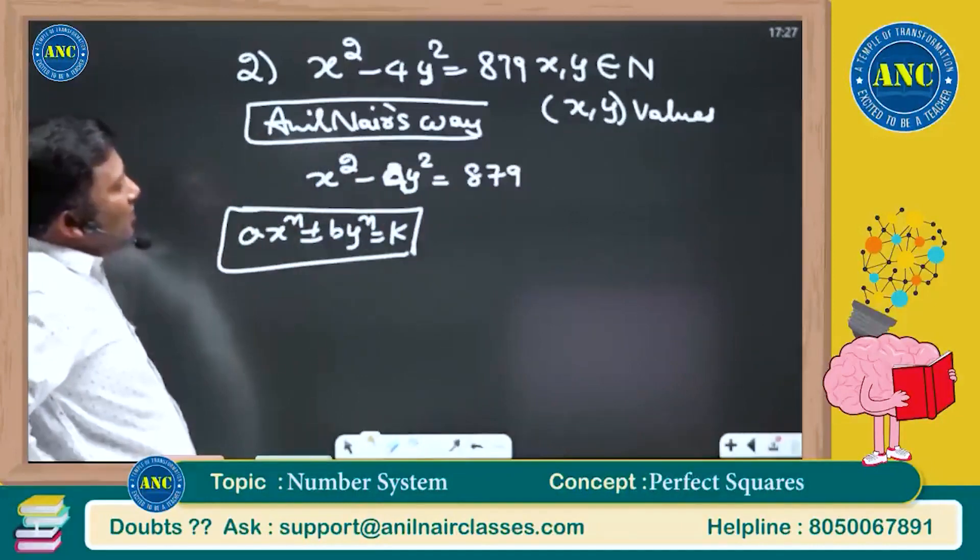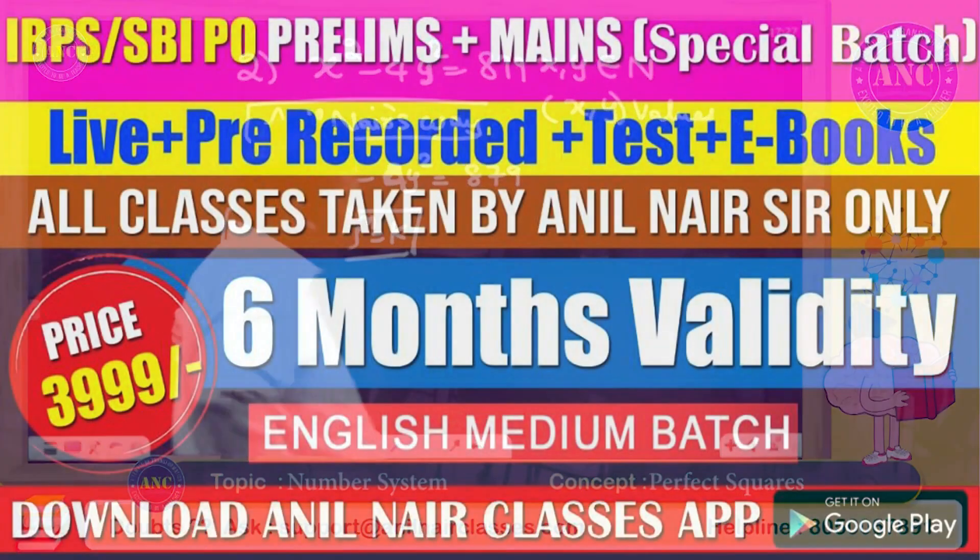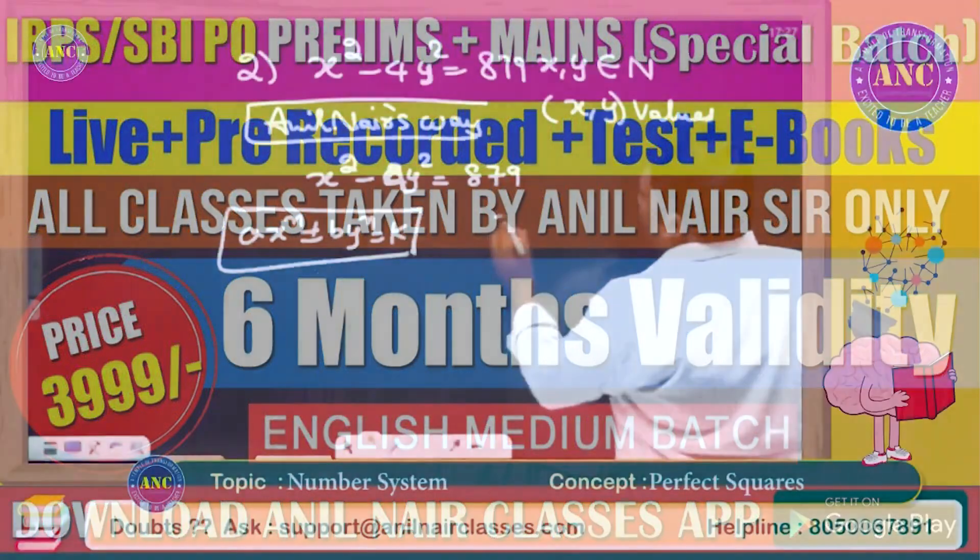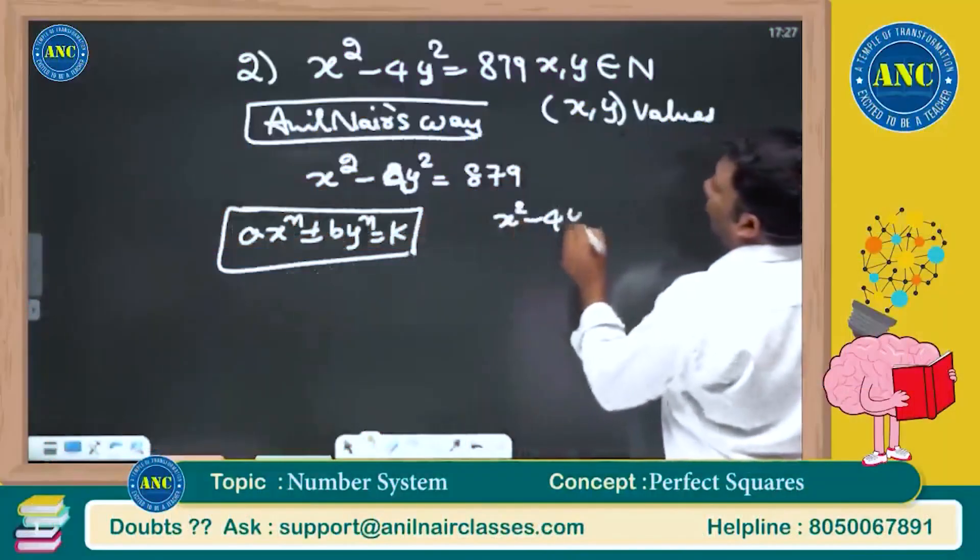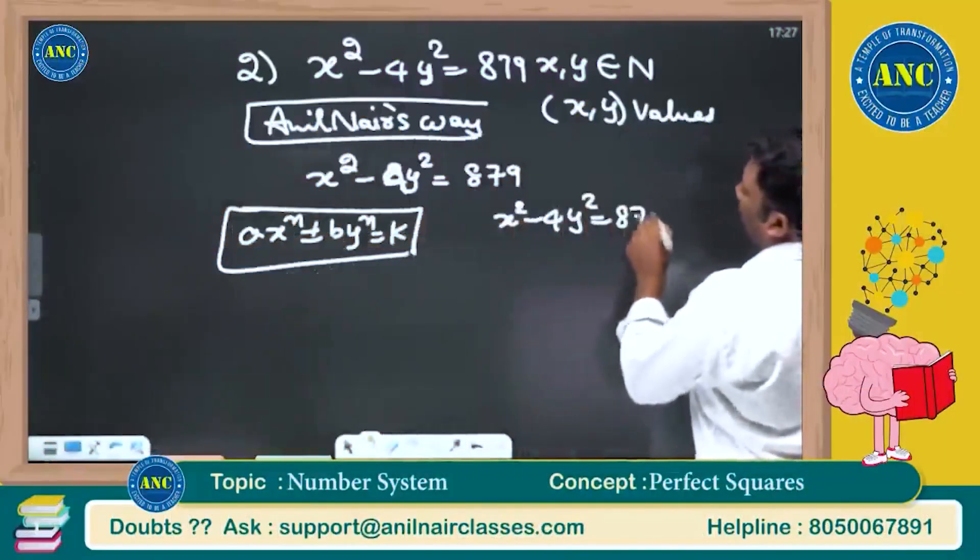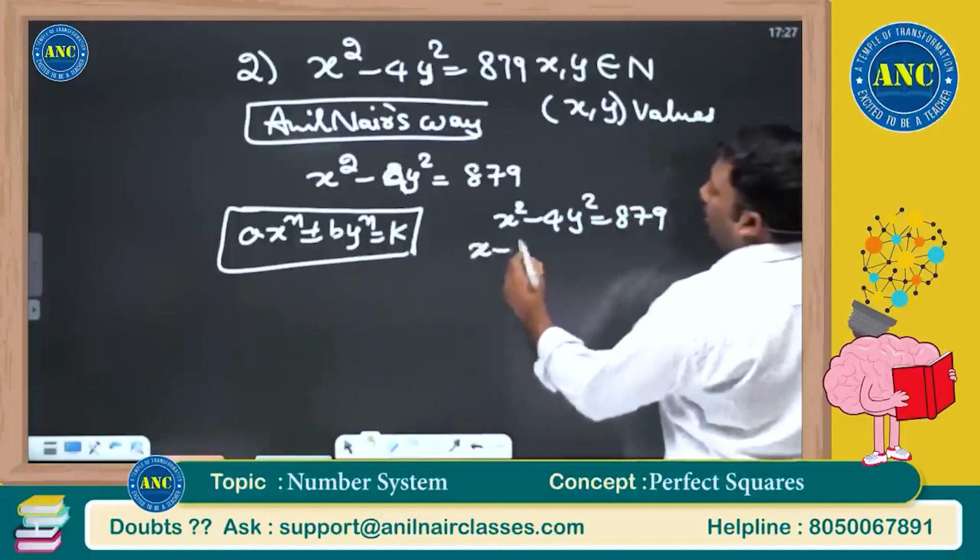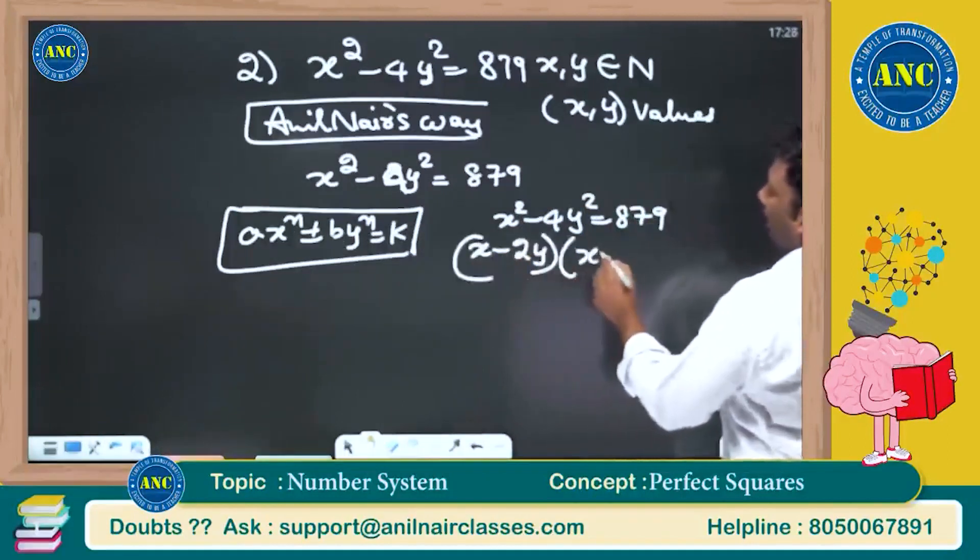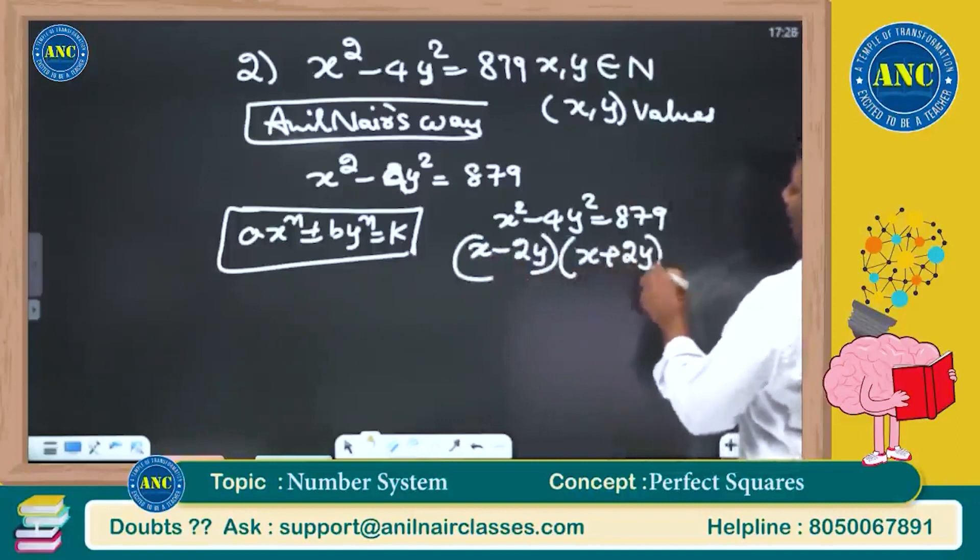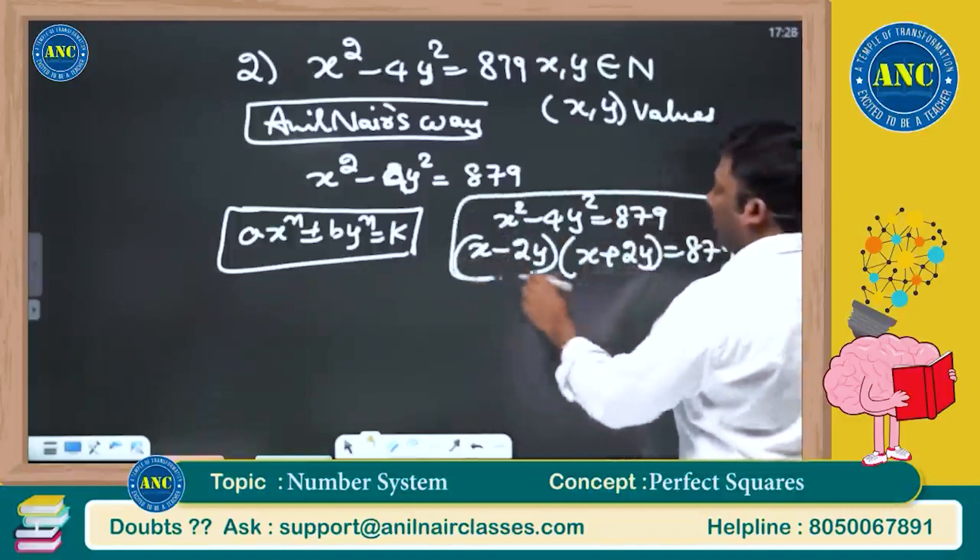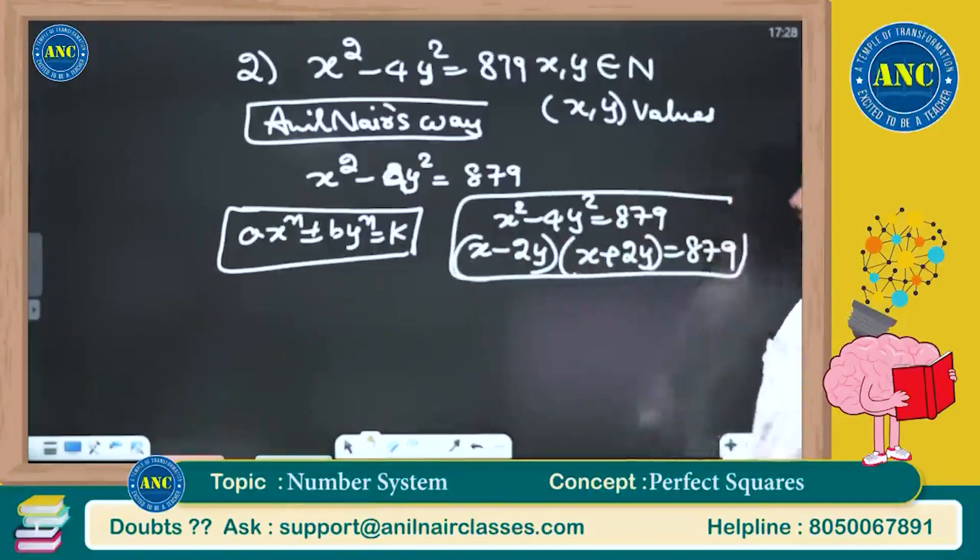x, y are natural numbers. You know what teachers will do? x square minus... most of the students also will solve this. If you are solving it like this, I am sorry to say you are moving in the wrong direction. Either there is a problem with the way that you have learnt mathematics, or there is a problem with the teachers who have habituated with formulae based learning.